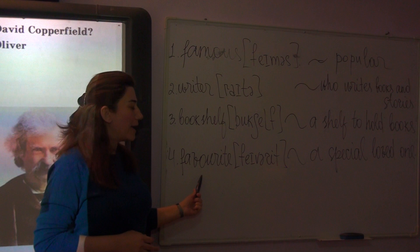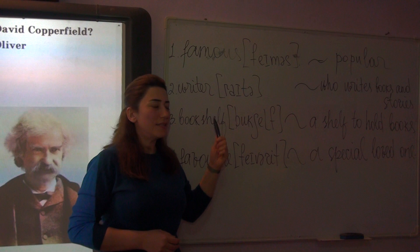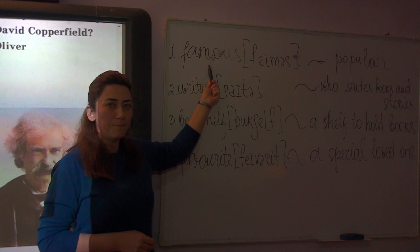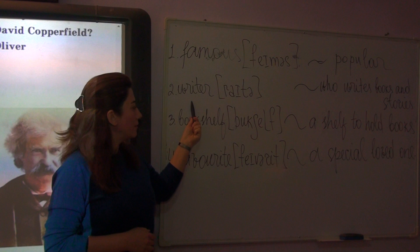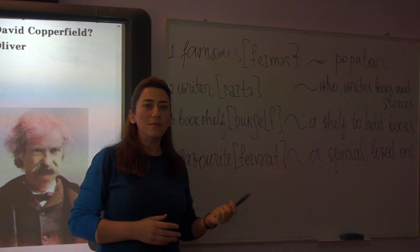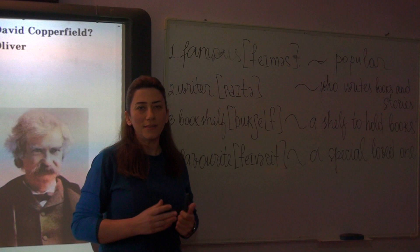Now let's use these words in sentences. For example: famous people. Writer — my favorite writer. And bookshelf — my bookshelf. For example: I have a bookshelf in my room. And favorite — my favorite writer is Charles Dickens.